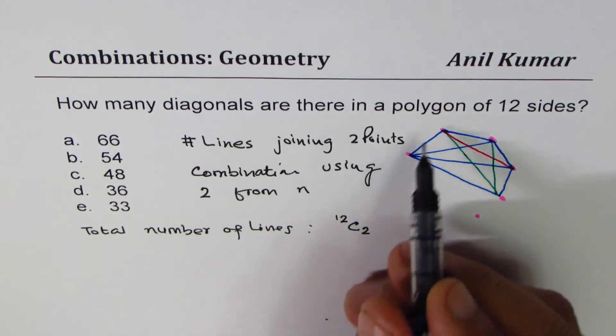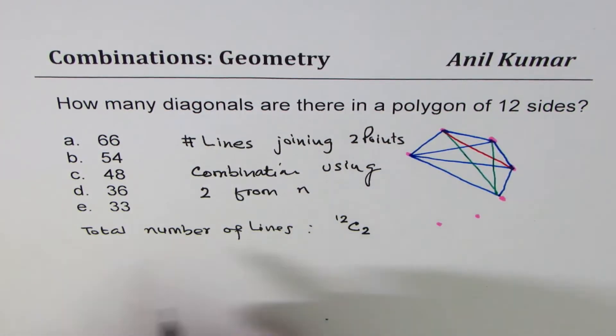Out of n sides of the polygon, how many are diagonals?